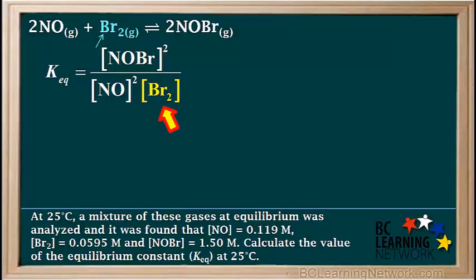The other reactant is Br2, so we write the concentration of Br2 here on the bottom. The coefficient on Br2 is 1, so we don't write any exponents on the concentration of Br2.